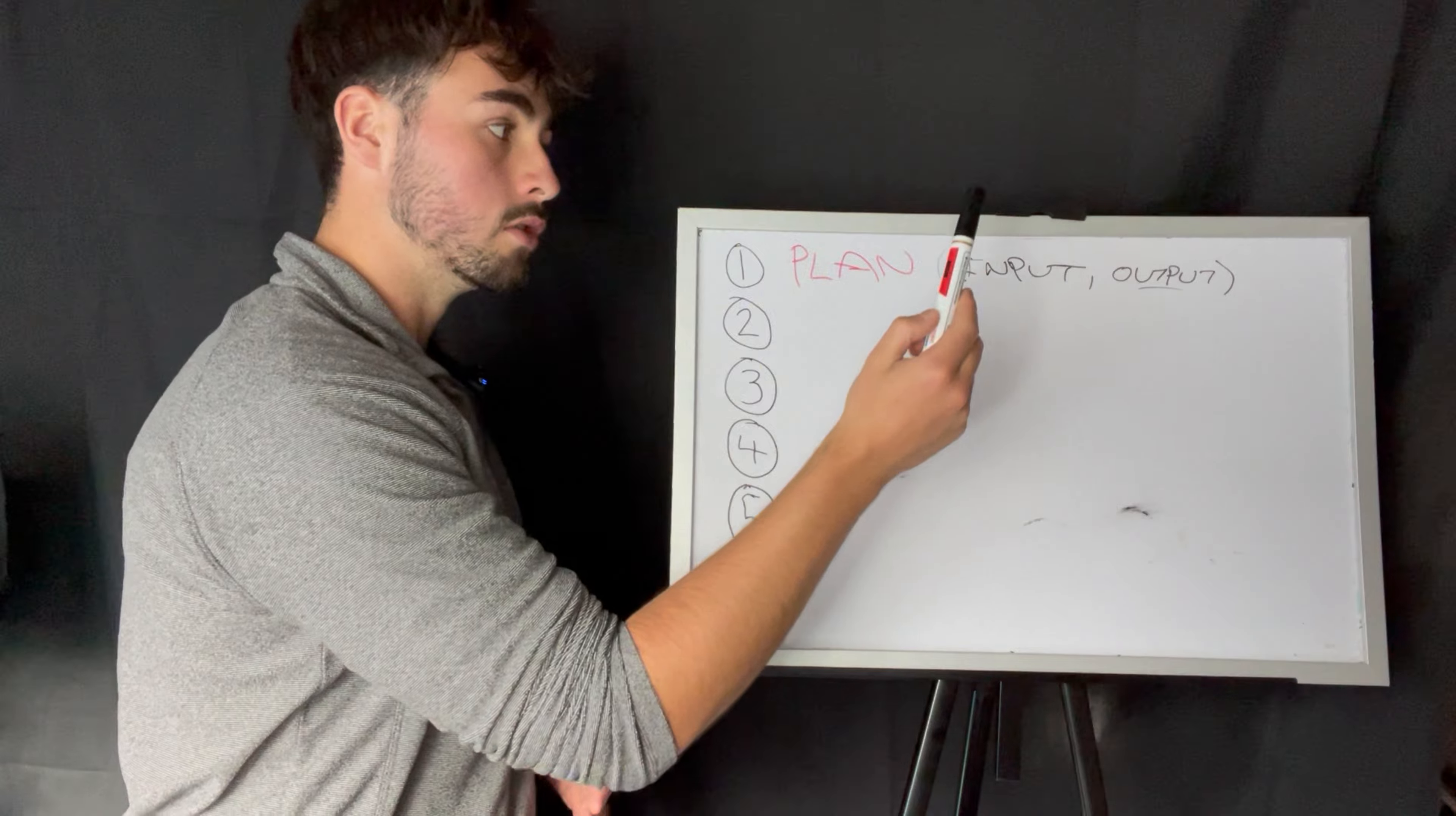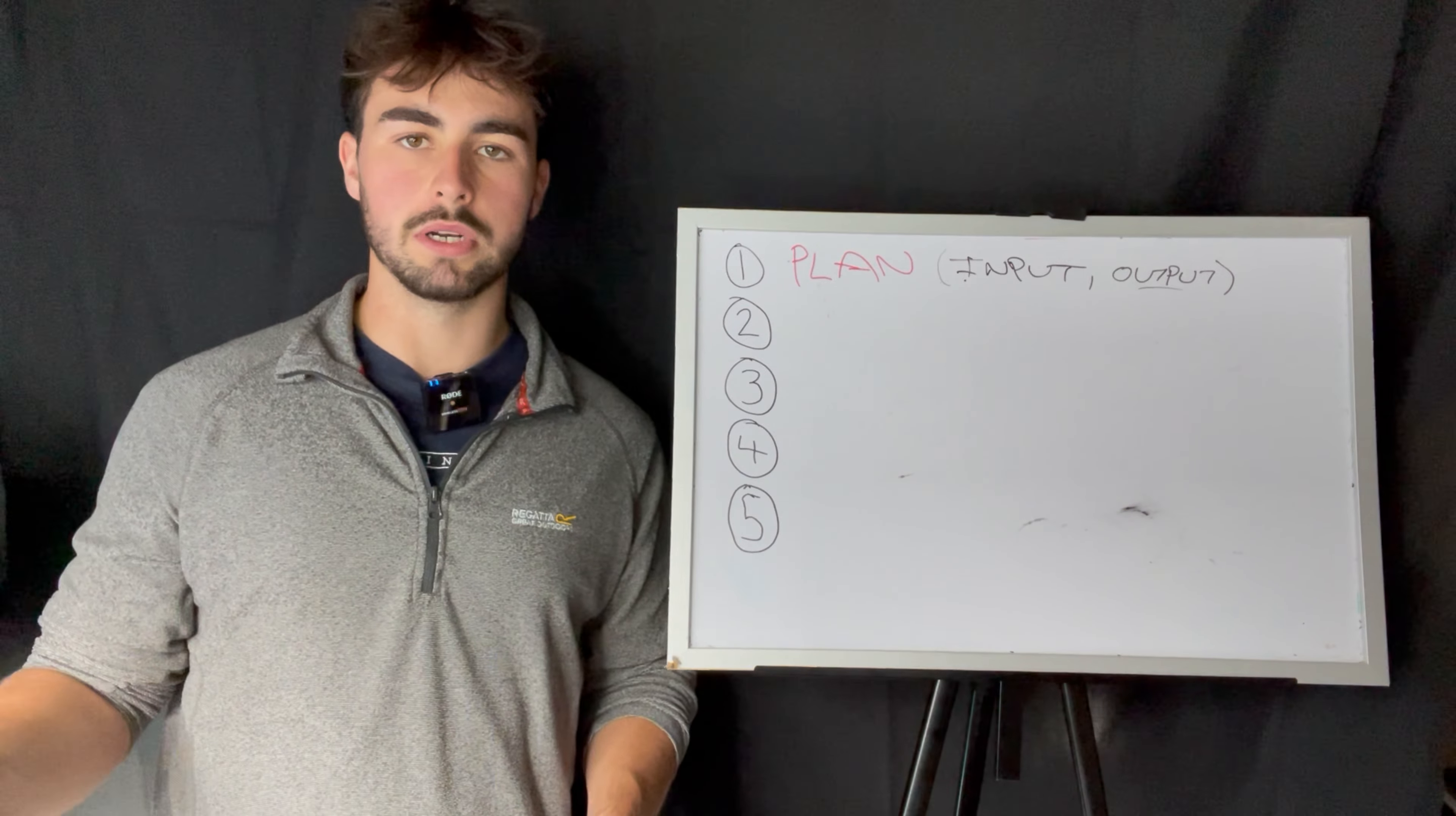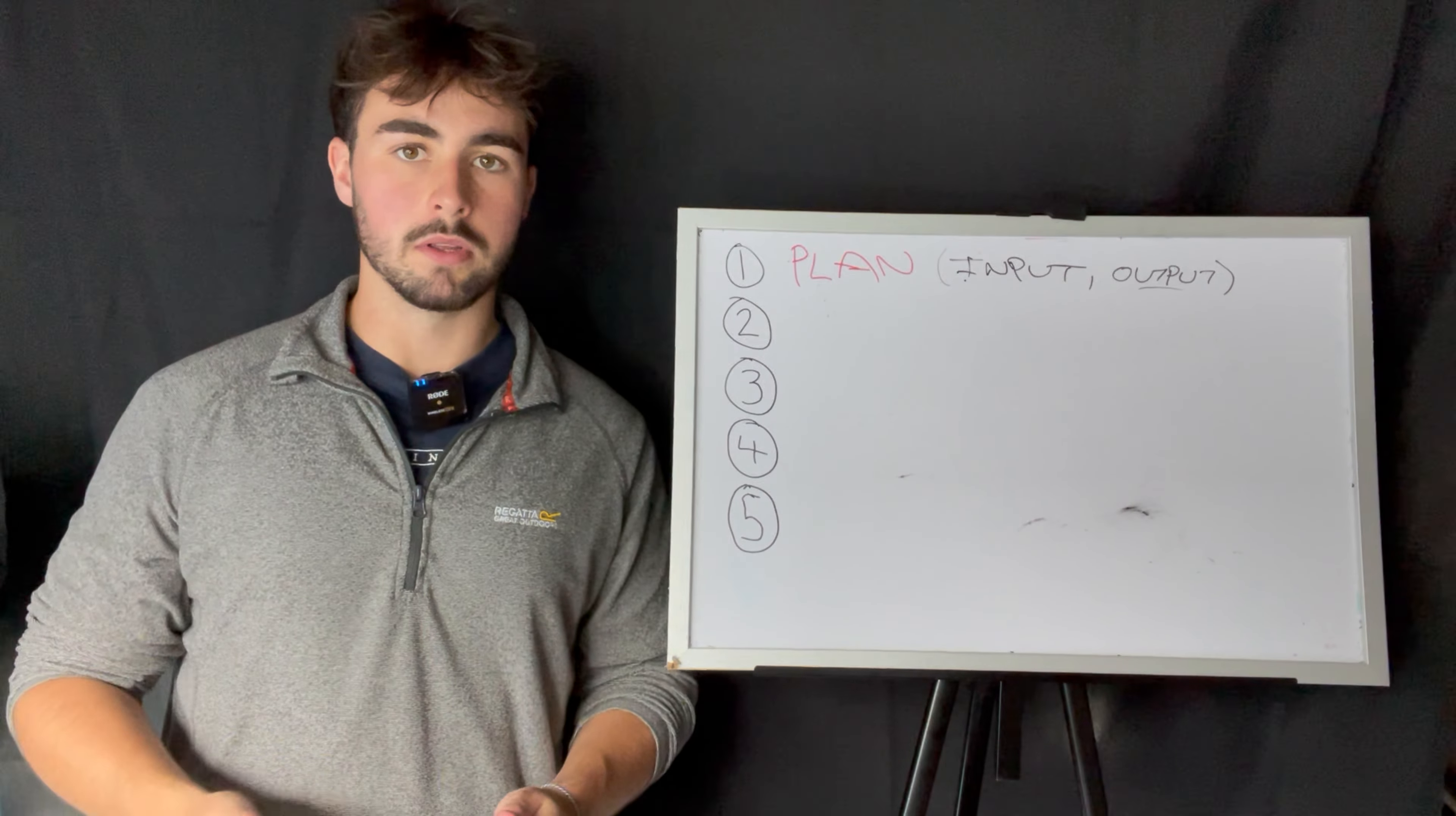We turn our interest to the inputs, which are things we can control. For example, with my output wanting a certain amount of subscribers, the input I would put in is upload a video every single day. The output of wanting a good grade, the input would be study two to three hours per day.